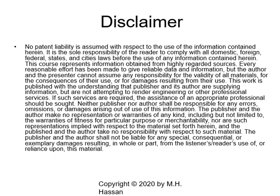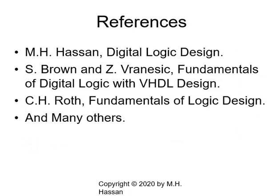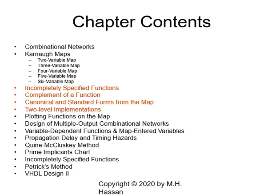This is a disclaimer for you to read. There are many references in digital logic design; I cite three of them here. The chapter covers Combinational Networks. We started with Karnaugh Maps — two-variable K-maps, three-variable K-map, four-variable K-map, five-variable and six-variable K-maps. Today we'll talk about incompletely specified functions, complement of a function, canonical and standard forms from the map, and two-level limitations.